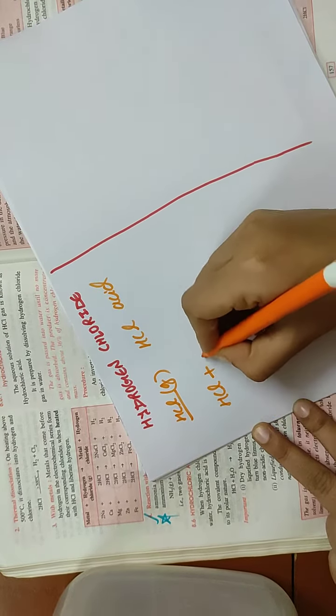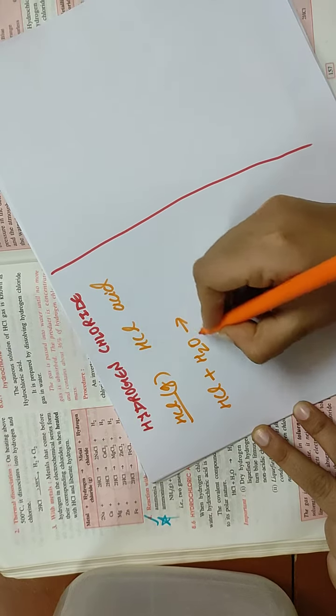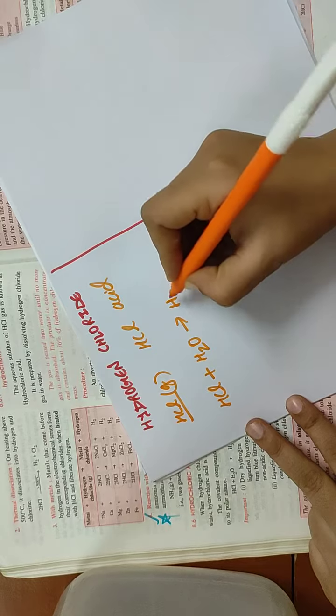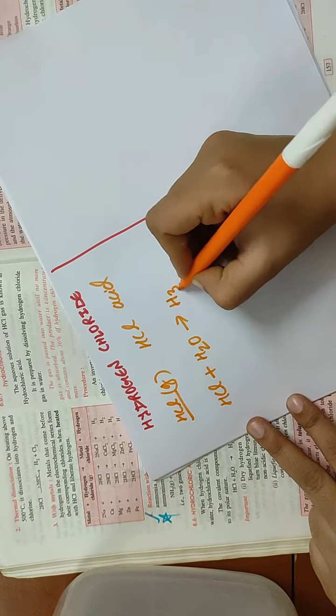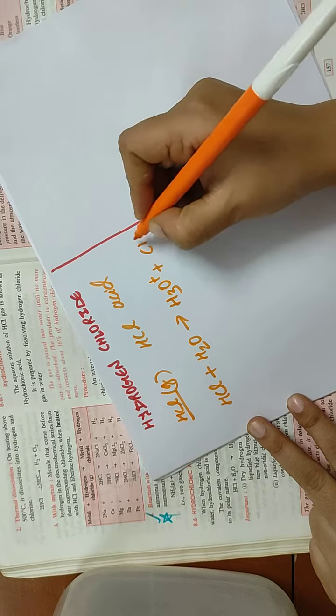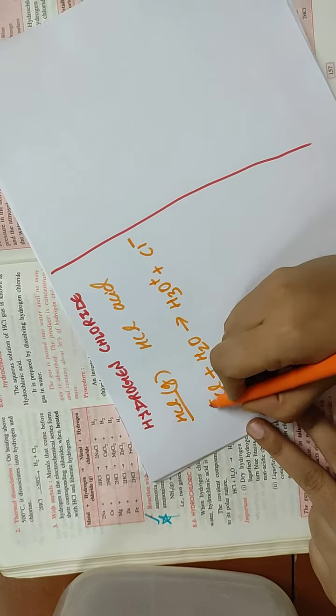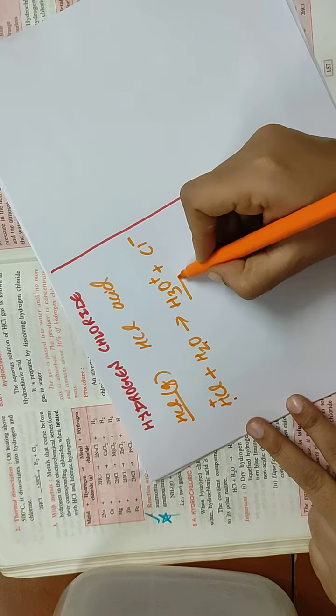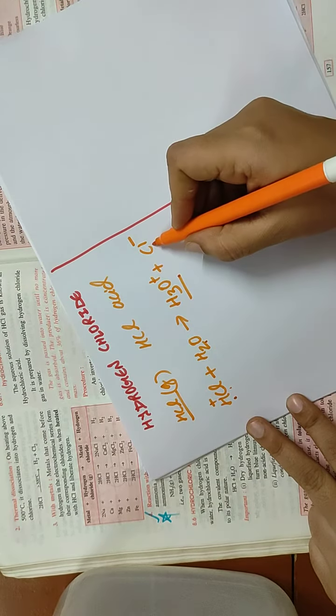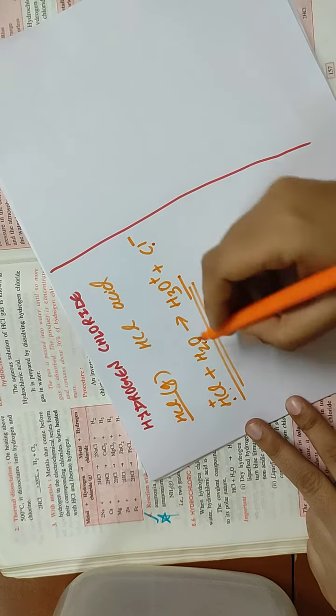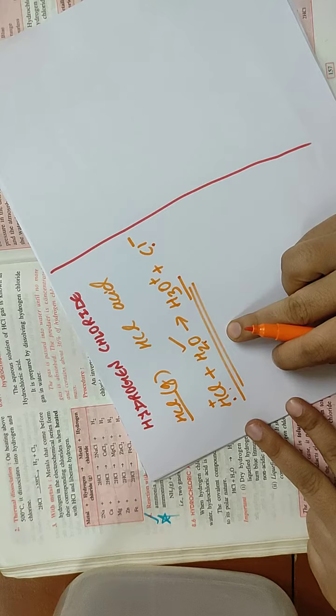Whenever HCl is mixed with water, it will dissociate into ions and form H3O+ and chloride ion. When H+ combines with a water molecule, it gives H3O+, and the remaining chloride ion is left. This is the dissociation of an acid because of the presence of water.